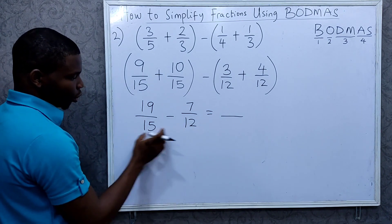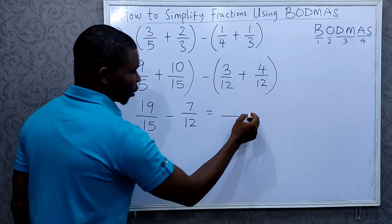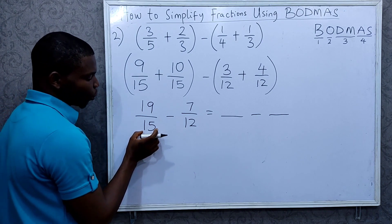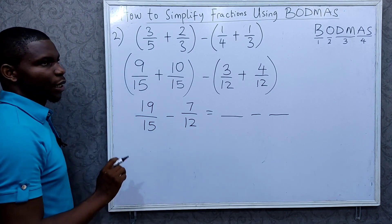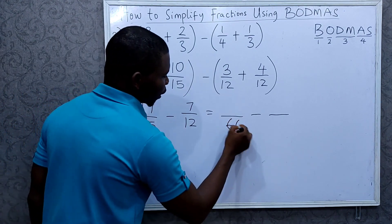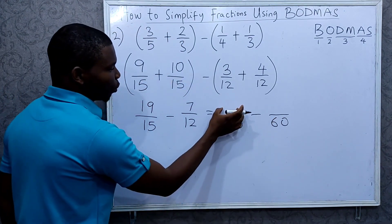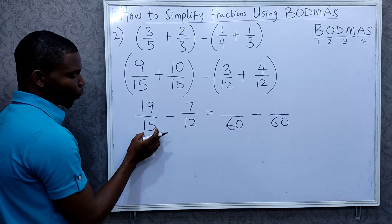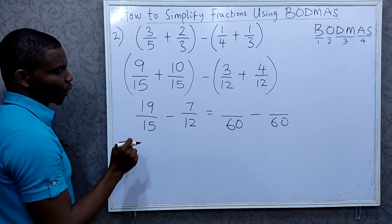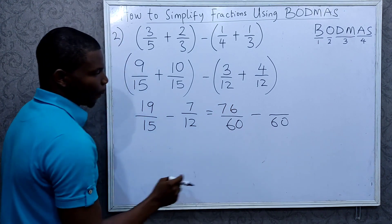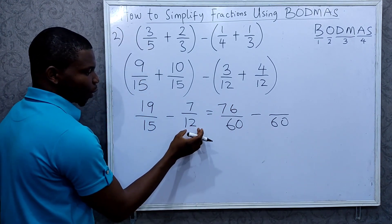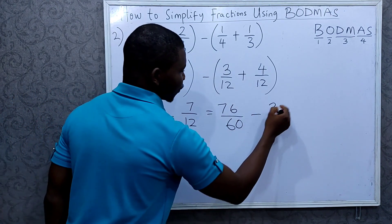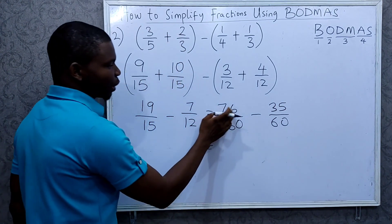The denominators are different again, so I'm going to look for the LCM. The LCM of 15 and 12 is 60. So I'll write 60 here and 60 here. Then for the numerator: 60 divided by 15 is 4, and 4 times 19 is 76. Then 60 divided by 12 is 5, and 5 times 7 is 35.